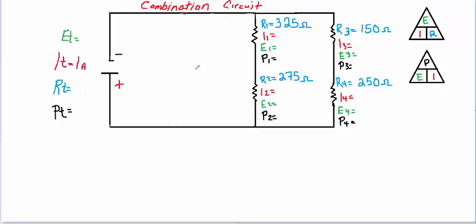Okay, so let's do this fairly simple combination circuit. The values I've given you, so you have a total current in the circuit that's one amp, and then we've got the four resistors here.